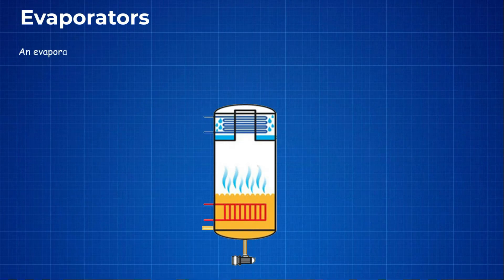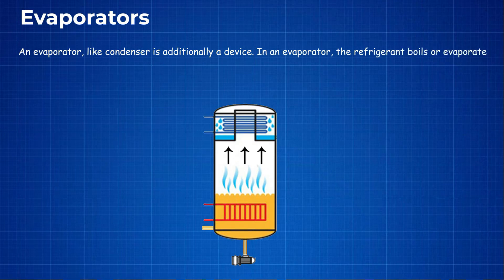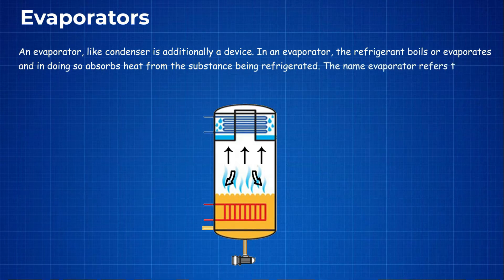An evaporator, like a condenser, is a device in which the refrigerant boils or evaporates, and in doing so absorbs heat from the substance being refrigerated. The name evaporator refers to the evaporation process occurring within the device.